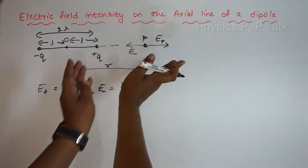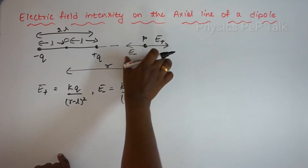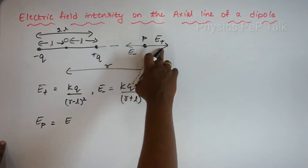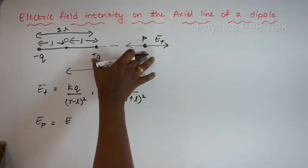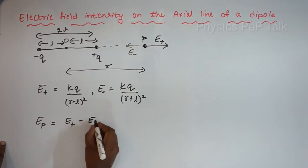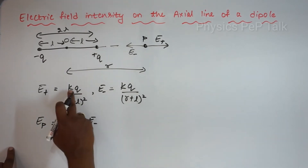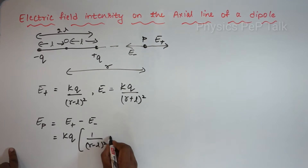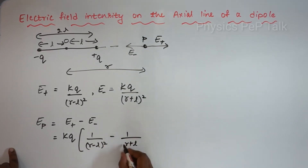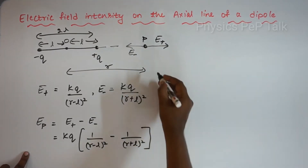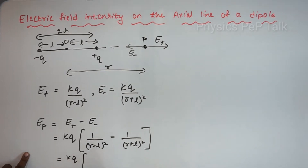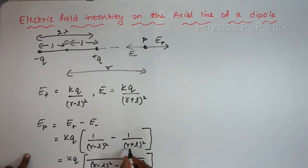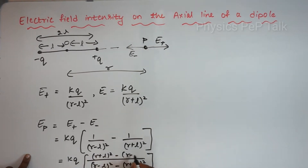To find the resultant electric field, we take the subtraction of these two electric field intensities. So the electric field at point P equals E plus minus E minus. Taking KQ as common, E of P equals KQ times [1 divided by (R minus L) squared minus 1 divided by (R plus L) squared]. Taking the LCM, this becomes KQ times [(R plus L) squared minus (R minus L) squared] divided by [(R minus L) squared times (R plus L) squared].